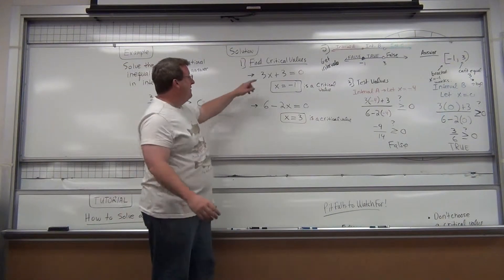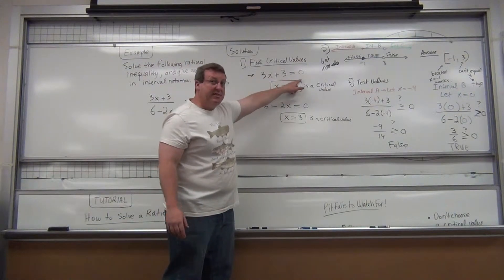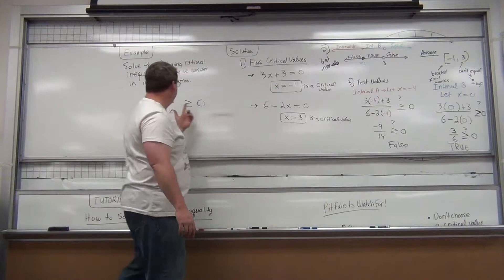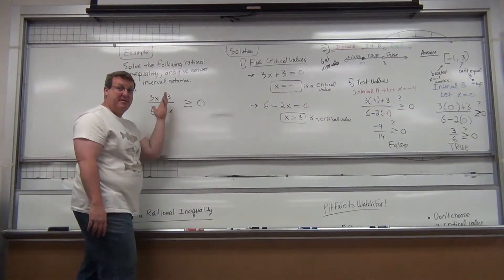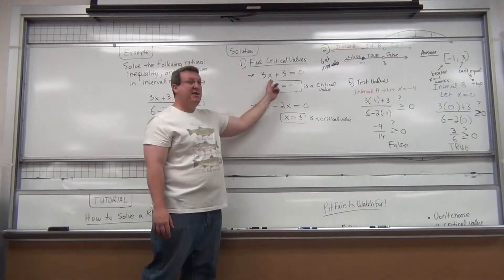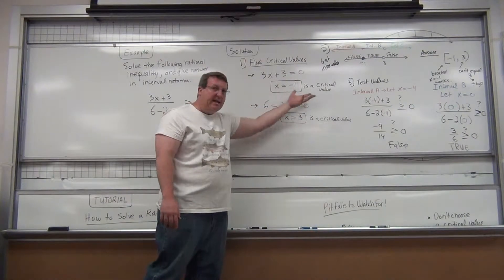So, let's get some critical values. First, set the numerator equal to zero, solve for x. What's the numerator? 3x plus 3, the thing on top. What x value makes that go to zero? Sure, negative one. Good job.